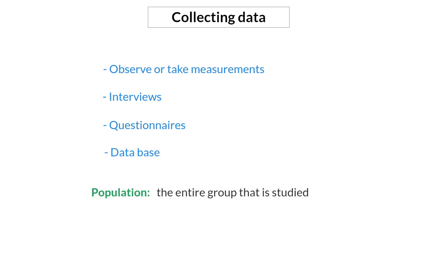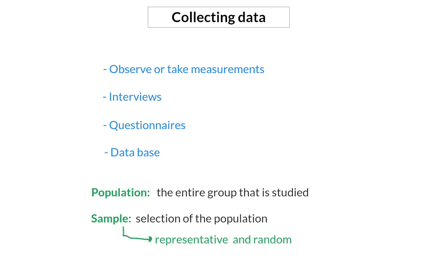The population of a set of data is the entire group that is being studied. But it's not always possible to gather the information of the entire group, and then we make use of a sample. The sample is a selection of the population, and it is very important that the sample is representative of the whole population and random. If not, the data will be biased and biased data can be misleading.